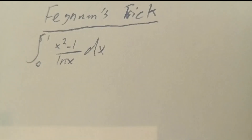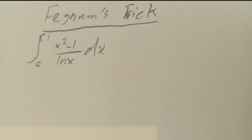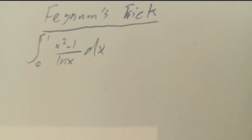Today we're going to look at Feynman's trick for solving integrals. Essentially, we want to have a simpler integrand to integrate. Take this integral from 0 to 1 of (x squared minus 1) over ln x, dx. Substitution, by parts, partial fractions — those regular techniques don't work, unfortunately.